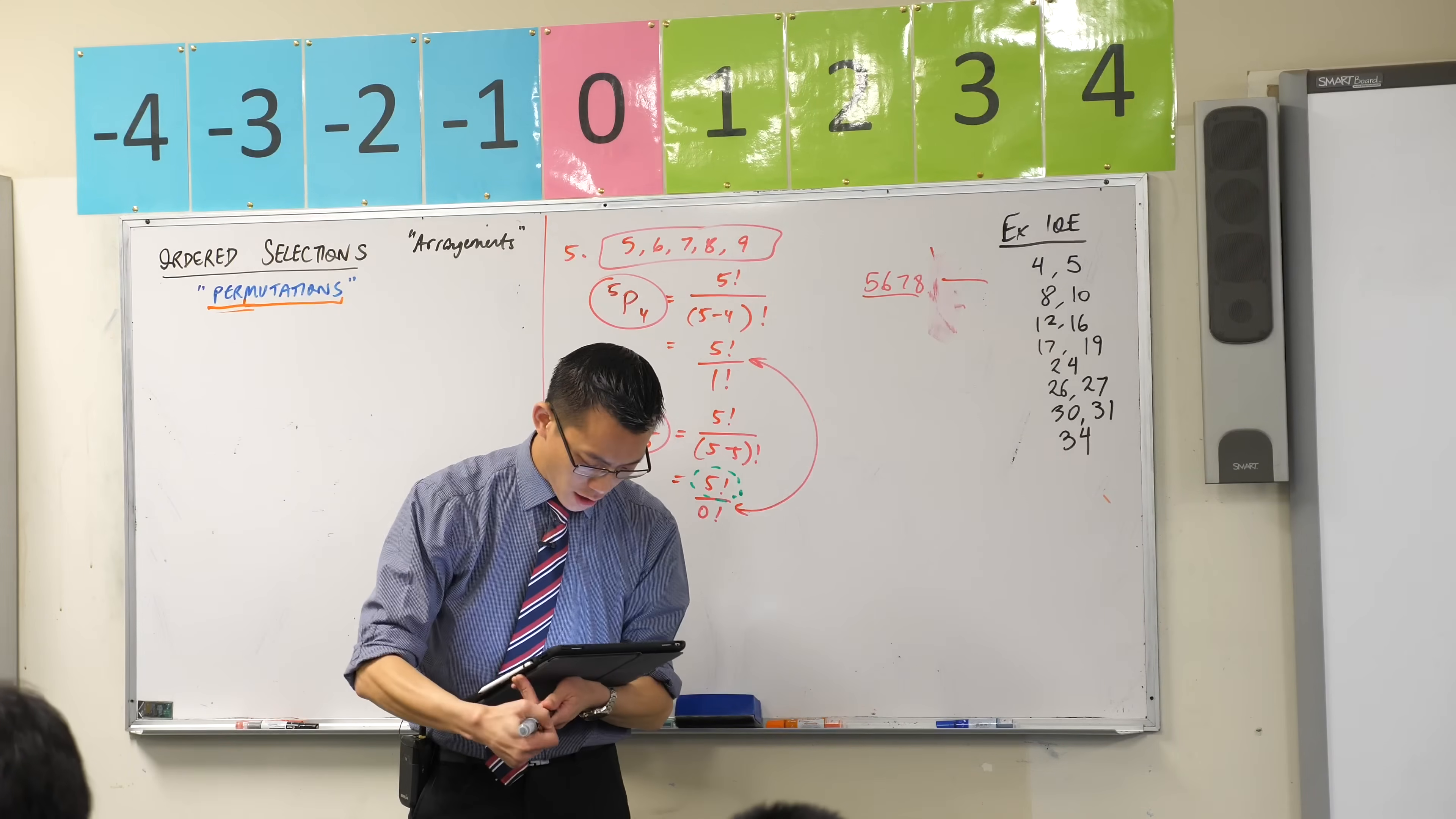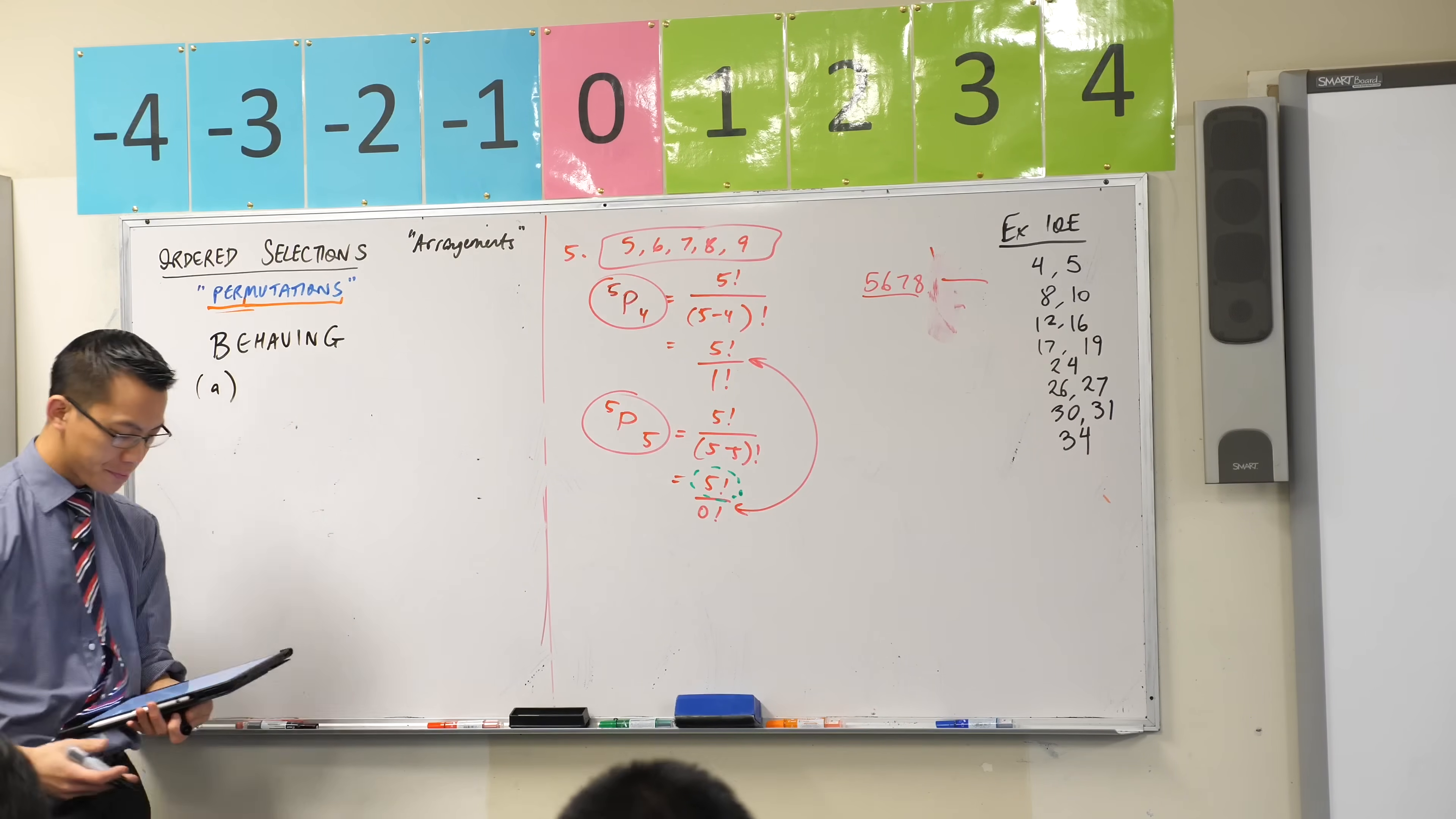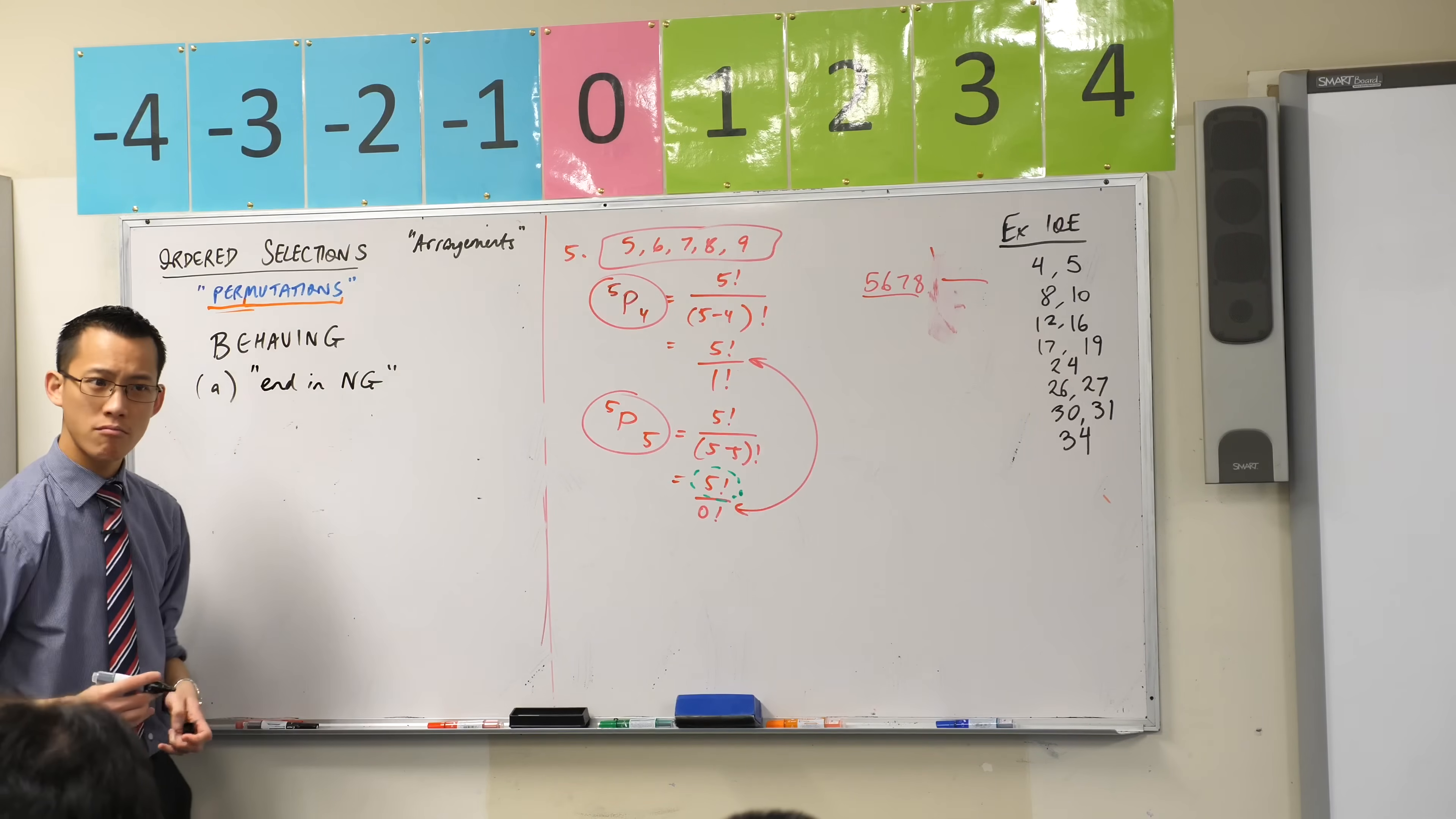Have a look at 19. Find how many arrangements of the letters of the word behaving, and I want to have a look at all of these together with you. So here's part A. How many arrangements end in ng? Sorry, it's just ng, isn't it? Is that right? End in ng?